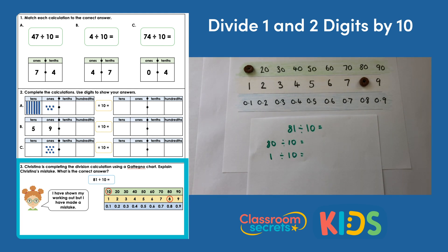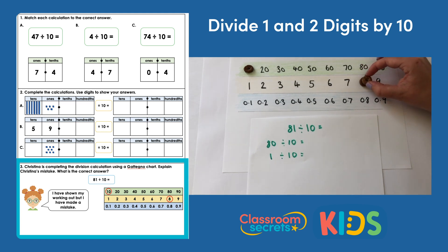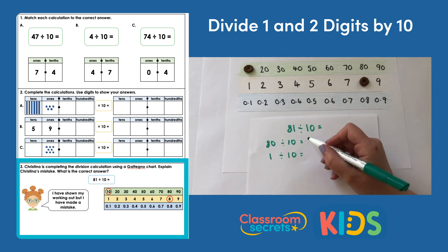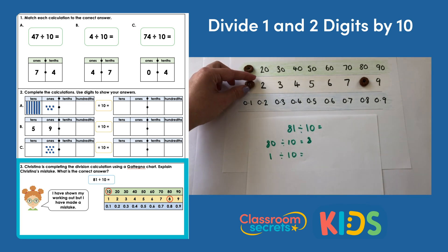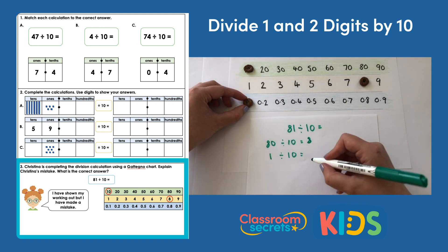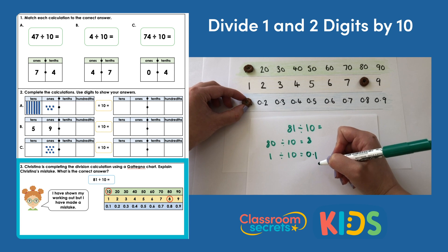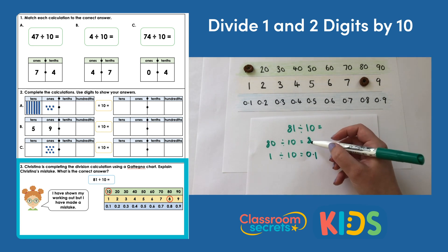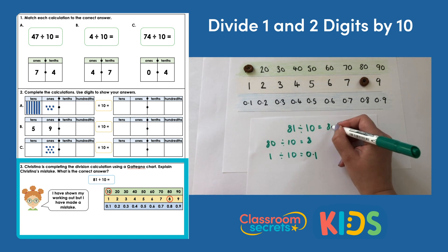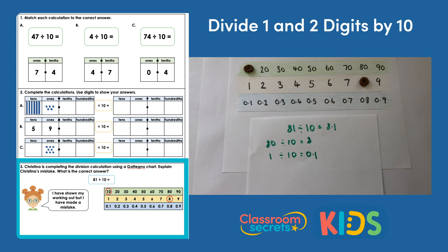So 80 divided by 10: we start with 80 and to divide by 10 we move one row down, giving us 8. Christina placed her counter in the correct place there. We then need to divide 1 by 10 — locate 1 and go down one row, giving 0.1. I can see that Christina actually went up one row, which is multiplying by 10. Putting our answer together: 8 and 0.1 is 8.1. So the correct answer is 8.1, and the mistake Christina made was that she multiplied 1 by 10 instead of dividing by 10.